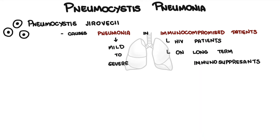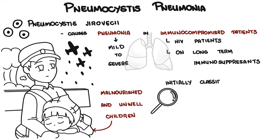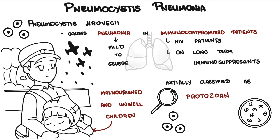Pneumocystis is actually a fungus that was first found to infect humans back in World War II, in infants and children specifically who were malnourished and unwell. At the time, Pneumocystis was thought to be a protozoan species because it had many forms that made it look like a protozoan under a microscope. However, genomic sequences found that Pneumocystis is much more closely related to a fungus, and so it was reclassified as a fungus and not a protozoan.